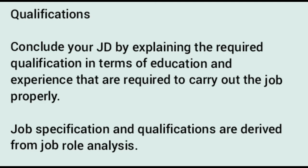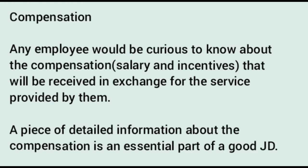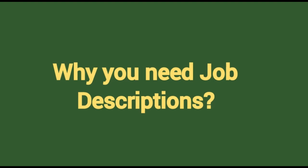Fourth, qualifications — conclude your JD by explaining the required qualifications in terms of education and experience needed to carry out the job properly. Job specifications and qualifications are derived from job role analysis. Sixth, skills — the skills required to perform the job should be mentioned in the JD as well, since an individual's skills can have a huge impact on job performance efficiency. Seventh, compensation — any employee would be curious to know about salary, incentives, and other benefits.